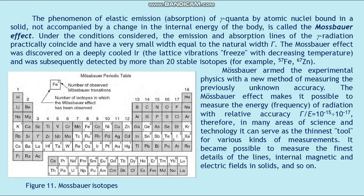The phenomenon of elastic emission and absorption of gamma quanta by atomic nuclei bound in a solid, not accompanied by a change of internal energy of the body, is called the Mössbauer effect. Under these conditions, the emission and absorption lines of gamma radiation practically coincide and have a very small width equal to the natural width. The Mössbauer effect was first discovered in deeply cooled iridium, where lattice vibrations freeze with decreasing temperature, and was subsequently detected in more than 20 stable isotopes, for example ⁵⁷Fe and ⁶⁷Zn.